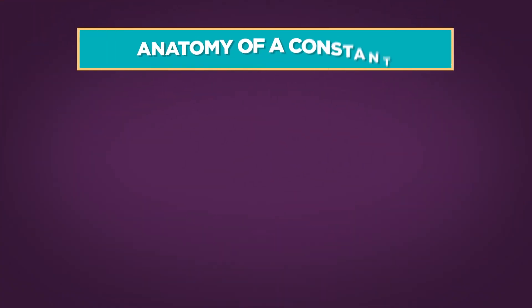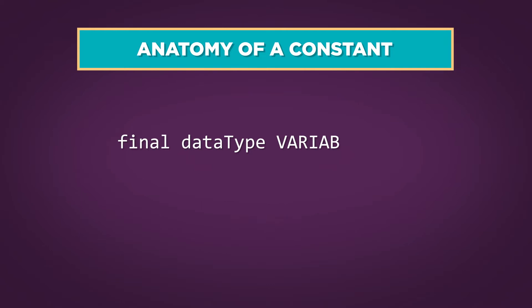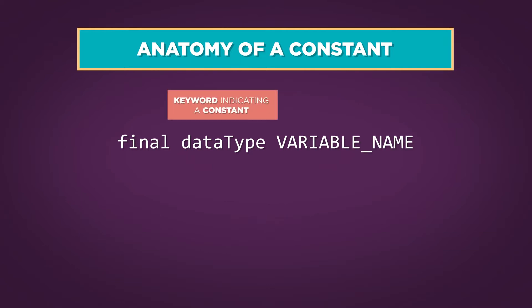We can create our own constants using the keyword final. First, write final, then the data type, then the name of the variable. When a variable has the keyword final, it is now a constant. The program can't give it a new value.